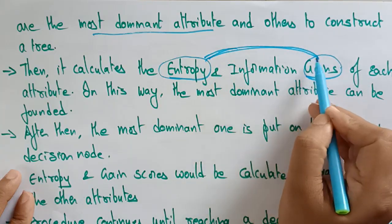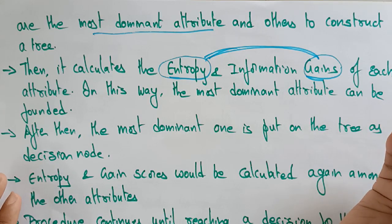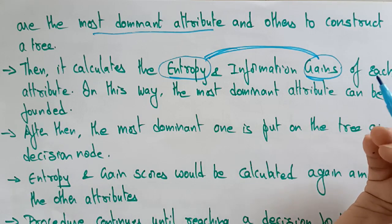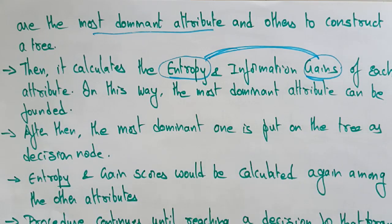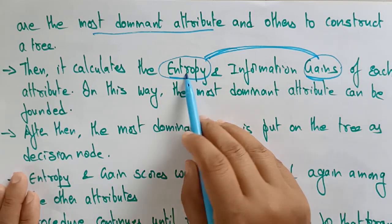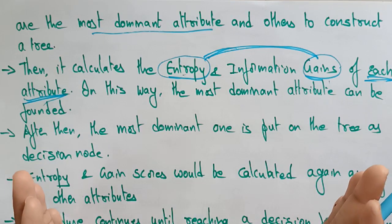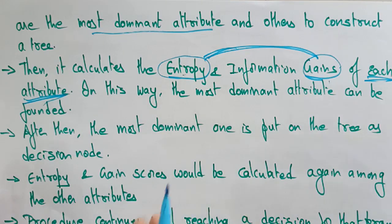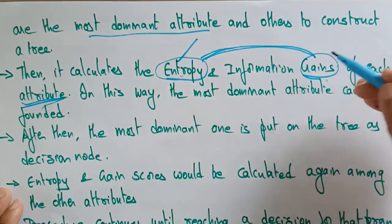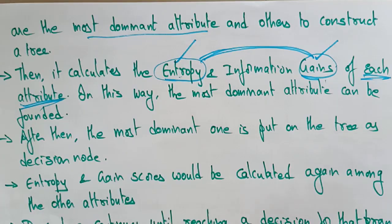Then it calculates the entropy and information gain of each attribute. For example, whether it is raining or humidity — which day we prefer to go out — can be decided by calculating the entropy and gain values of each attribute. For each attribute involved, you need to find the entropy value and the gain value, then apply the formulas on each and every attribute.